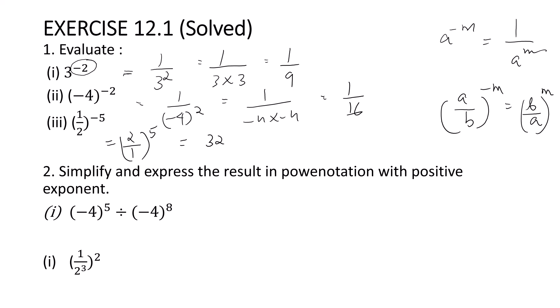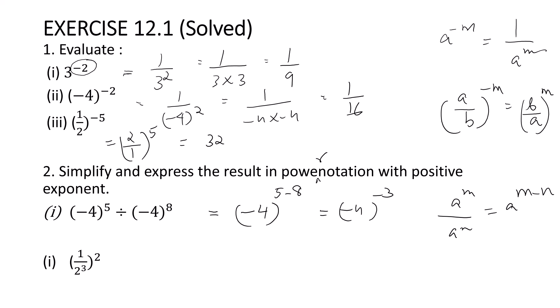The second question is to simplify and express the result in power notation with positive exponents. We use the law of exponents: a raised to m divided by a raised to n equals a raised to m minus n. So we can write it as minus 4 raised to 5 minus 8, which is minus 4 raised to minus 3. Since the exponent is negative, we make it positive: 1 by (minus 4) raised to 3.